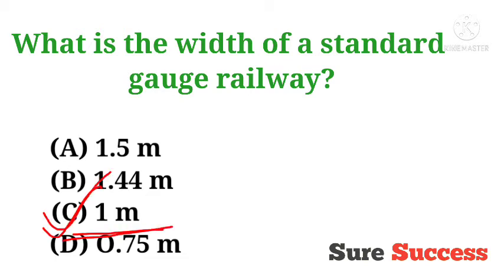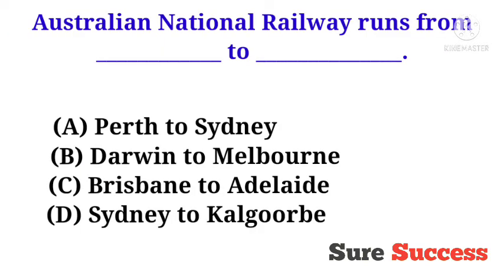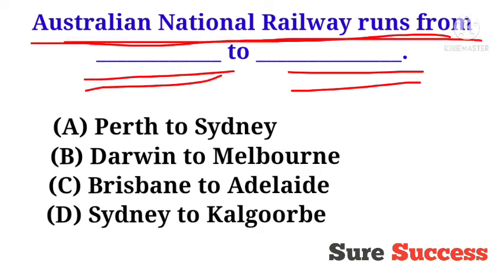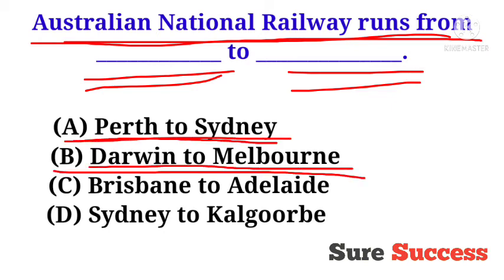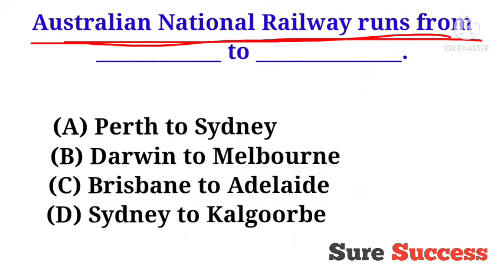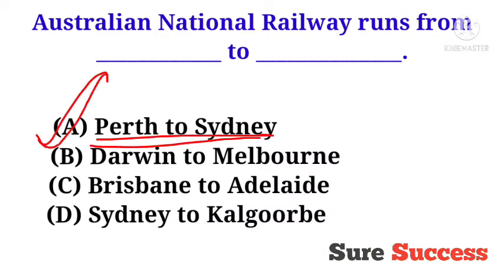The Australian National Railway runs from blank to blank. Options are Perth to Sydney, Darwin to Melbourne, Brisbane to Adelaide, and Sydney to Calgary. The correct answer is Perth to Sydney — the Australian National Railway runs from Perth to Sydney.